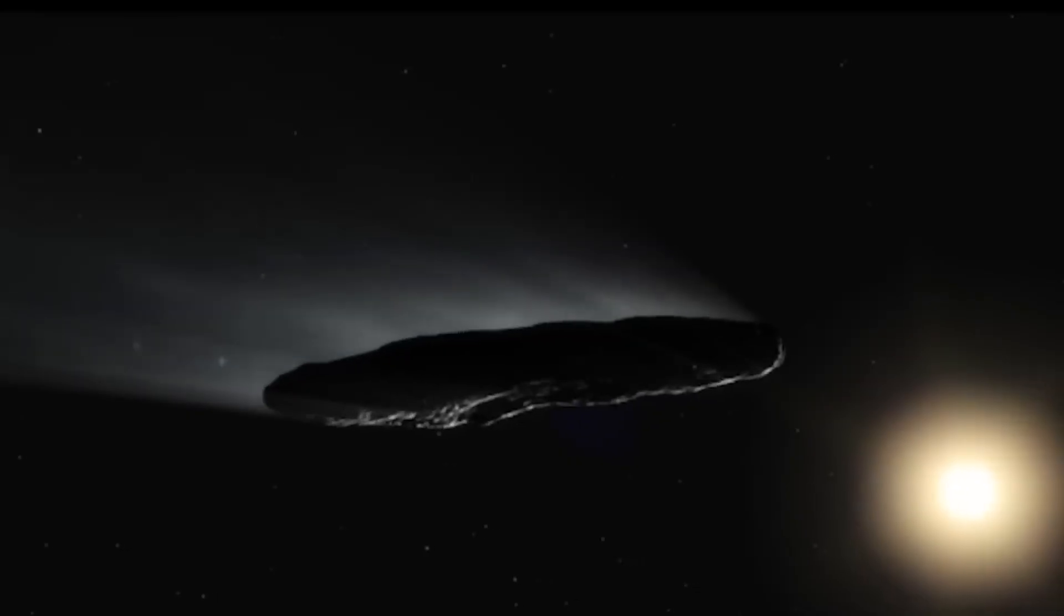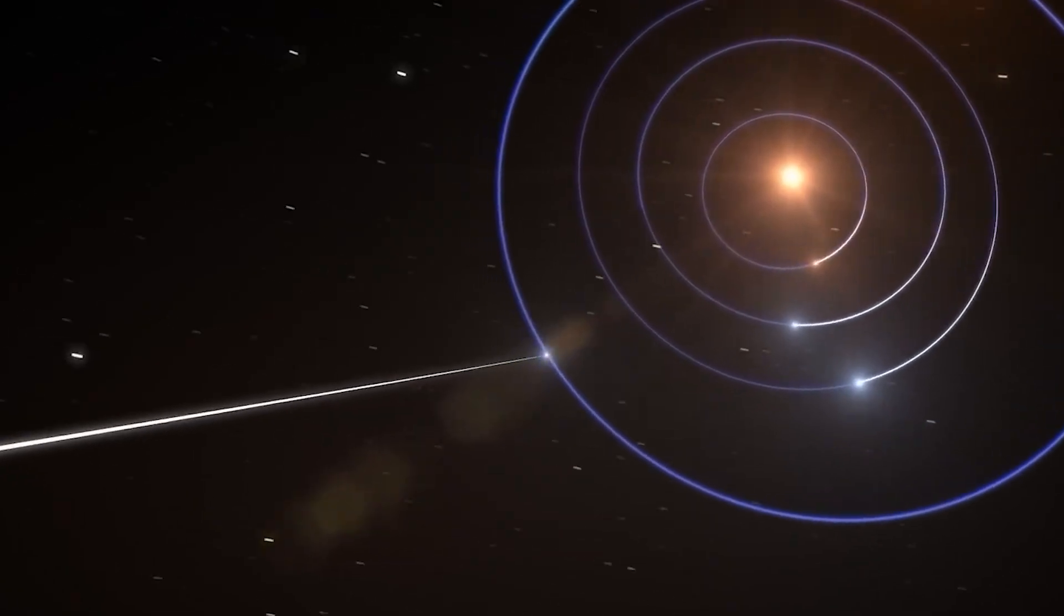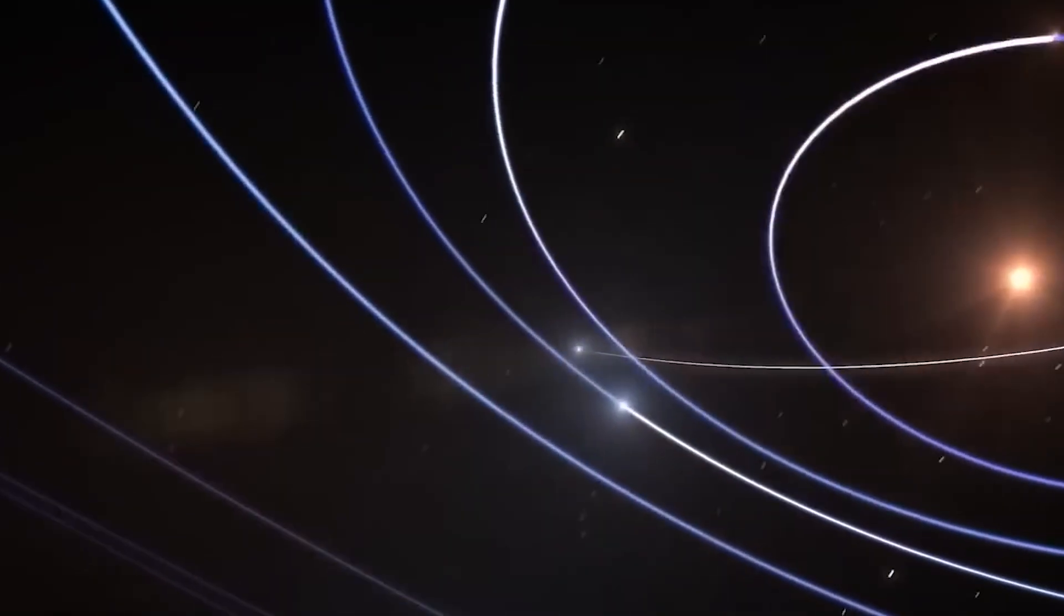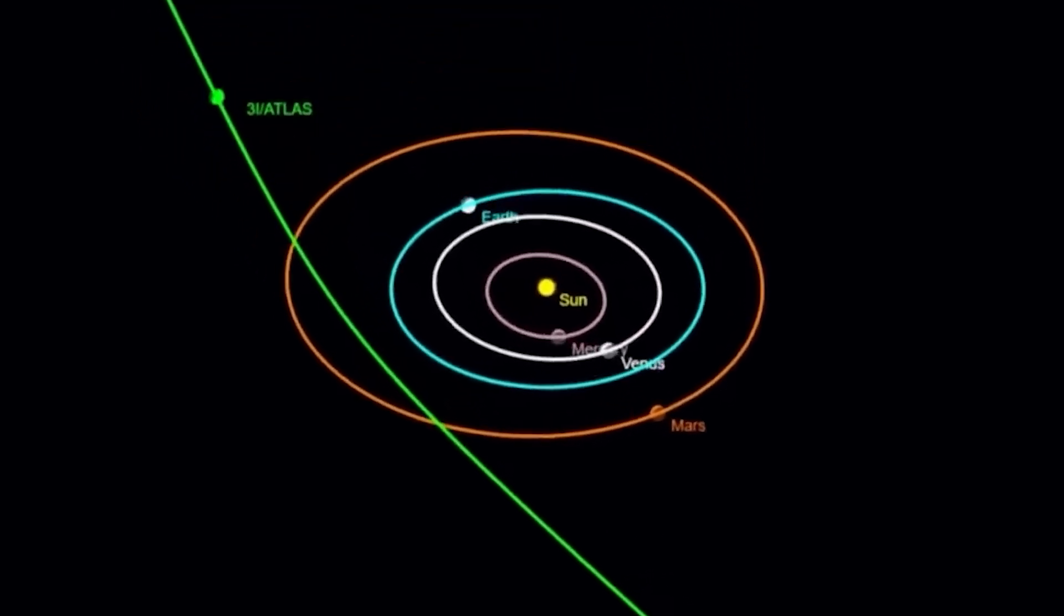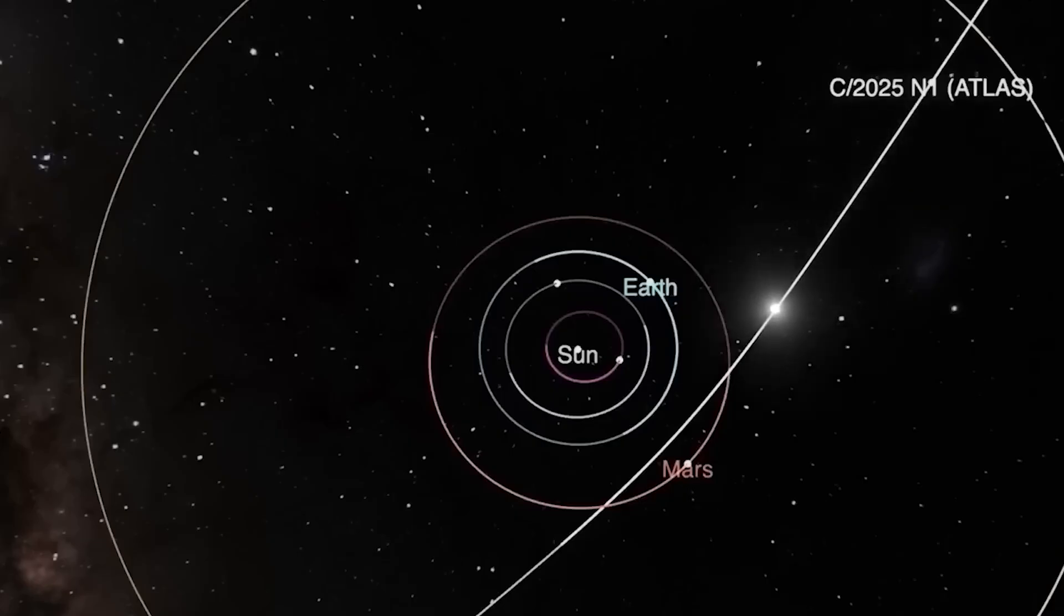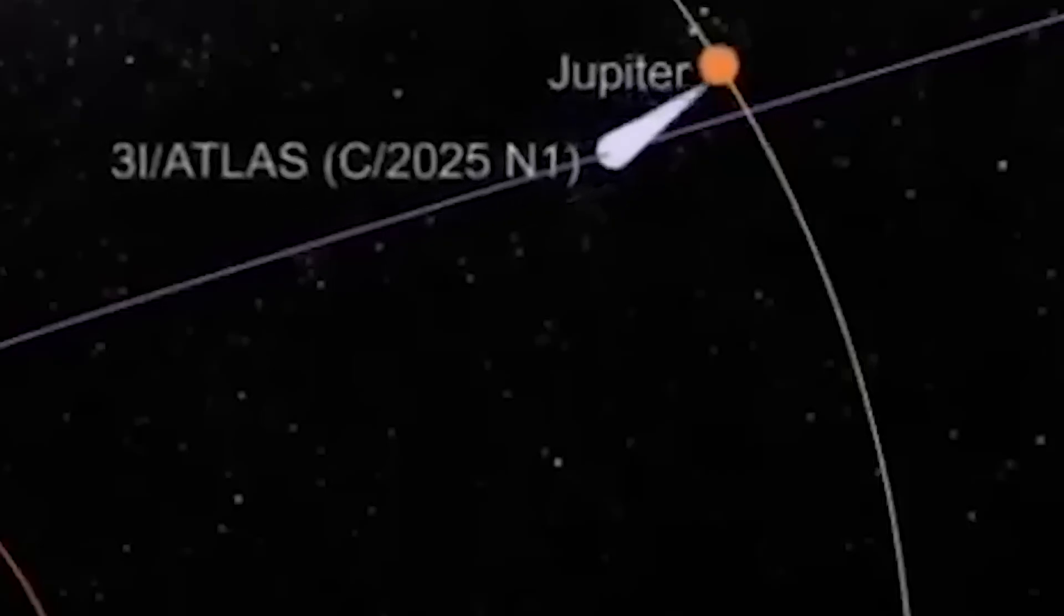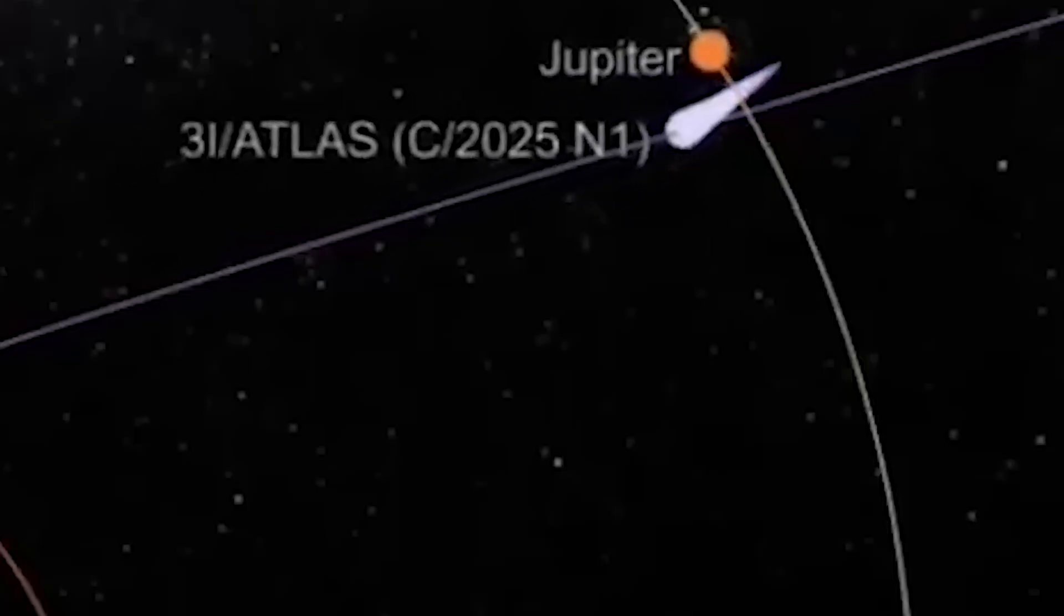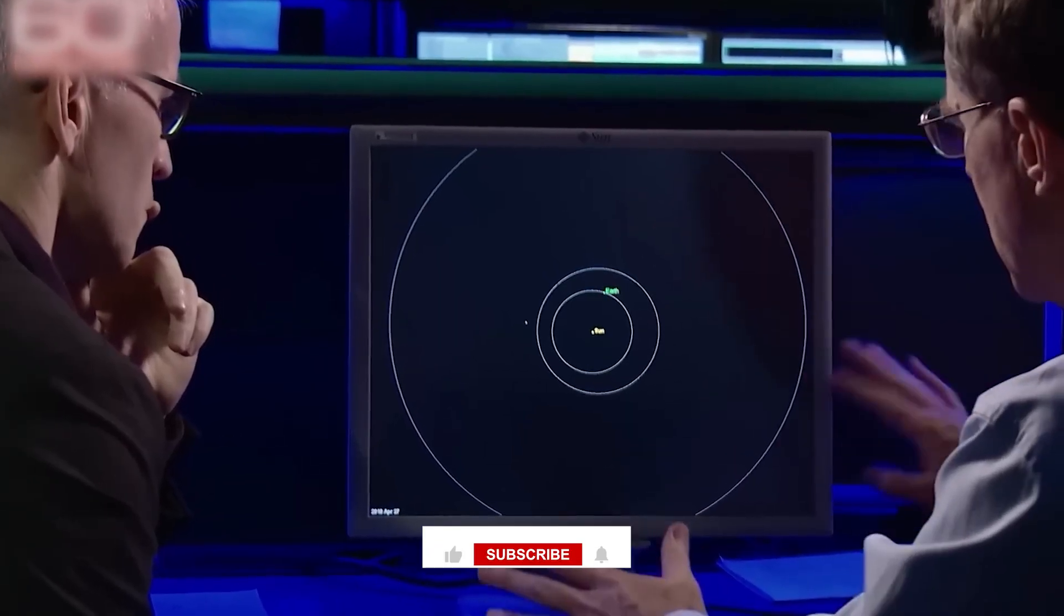And then there's the flight path. Buckle up, because this is where it gets seriously spooky. 3I Atlas is on a retrograde orbit, but it's tilted only about 5 degrees from our solar system's plane. The odds of that happening by chance? About 0.2%. But it's about to have a very busy autumn. It'll swing past Mars, then it reaches its closest approach to the sun, then it says hello to Jupiter. The combined probability of a random object making such precise close approaches to three planets? 1 in 20,000. This isn't a trajectory. It's a planned tour. The grand flipping tour of the inner solar system.